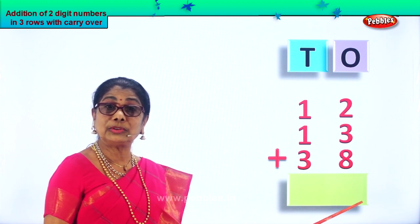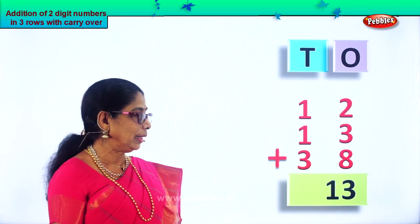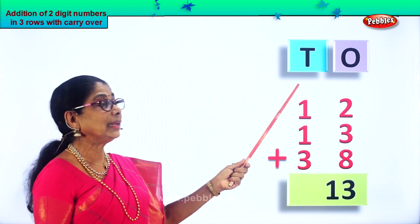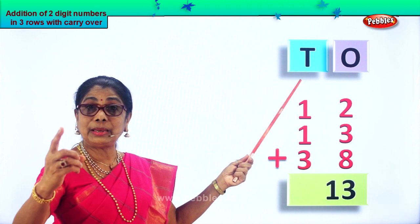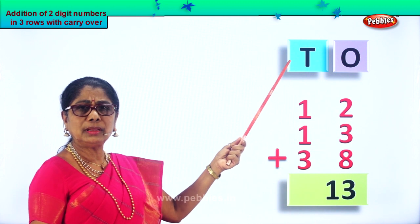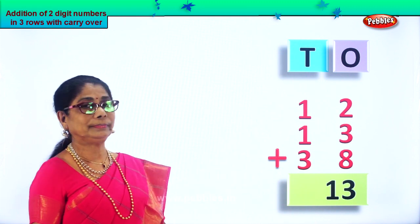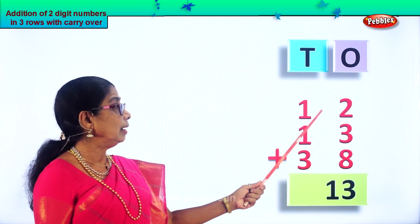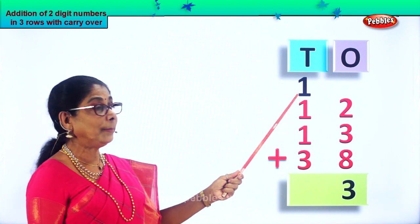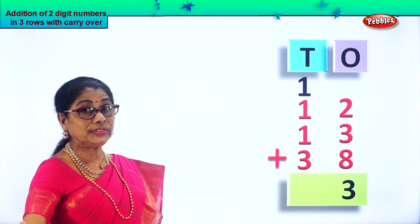That is one ten and three ones, or ten plus three. Now we leave the three in the ones place. We take ten ones and bring it up to the tens place — it becomes one ten. Carry over one to the tens place. Now let's add all the tens: one plus one plus one plus three.